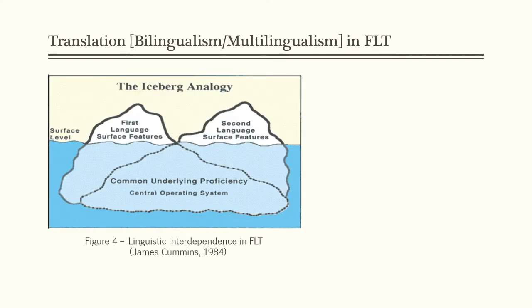I'll start by referring to the theory of linguistic interdependence by Jim Cummings of the University of Ontario. According to him, two languages are like two separate icebergs, but only apparently, because under the surface they belong to the very same large piece of ice. This submerged area is what Cummings defines as the CUP — the common underlying proficiency. It means that knowledge of a language at levels higher than colloquial use, at a more academic level, provides the mind with resources to acquire a second, third, and fourth language, because skills requiring greater cognitive effort — such as reading, writing, content learning, abstract thinking, and problem solving — are common to all languages.